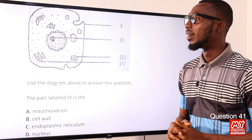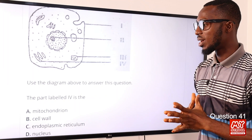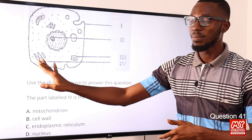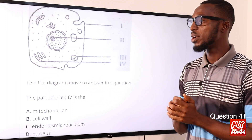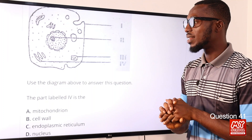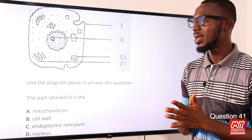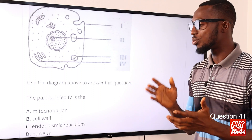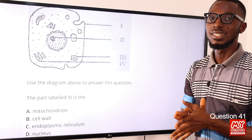Question 41. Use the diagram above to answer this question. The part labeled IV is the endoplasmic reticulum — we have the smooth and the rough types. The endoplasmic reticulum is responsible for the distribution of proteins and other materials around the cell — transport or distribution within the cytoplasm. So the correct option here is option C for endoplasmic reticulum.